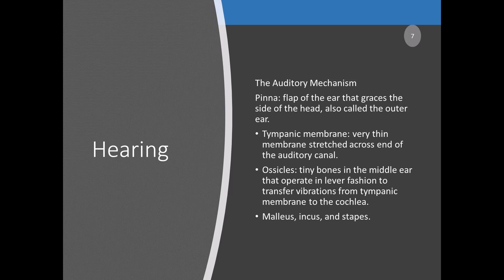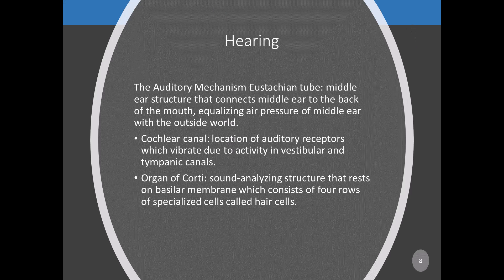Muscles attached to the ossicles can tighten joints to increase sensitivity to soft sounds and loosen connections to dampen large sounds. Another part of the ear is the Eustachian tube — a middle ear structure that connects the middle ear to the back of the mouth, equalizing the air pressure of the middle ear with the outside world.